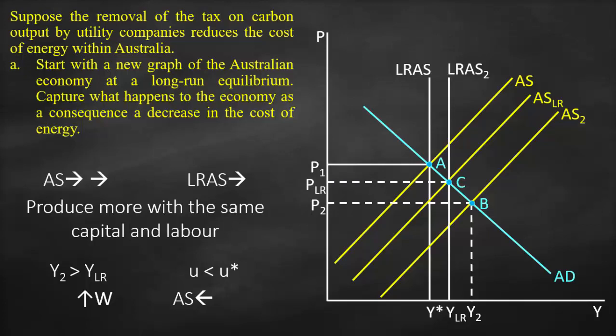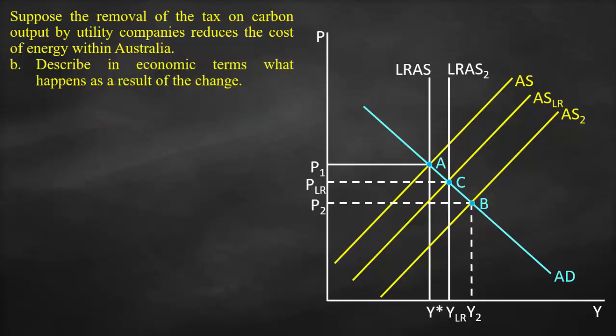At point C we reach our new higher potential output, and the new long-run price level PLR, which will be lower than P1 but higher than P2.